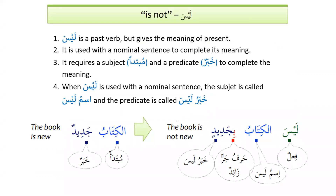Let's look at لَيْسَ. It is a past verb but gives the meaning of the present — something very important to know. Number one, لَيْسَ is past tense. Number two, لَيْسَ does not have a present tense form, so it is only used as past tense but gives the meaning of present. It is used with a nominal sentence and requires a subject (مُبْتَدَأ) and predicate (خَبَرٌ) to complete its meaning.